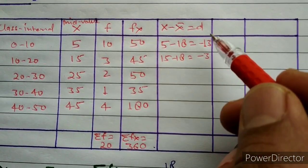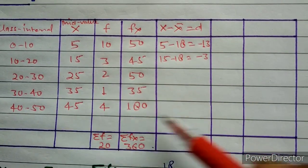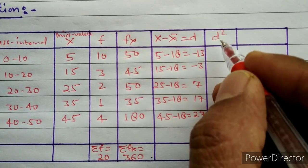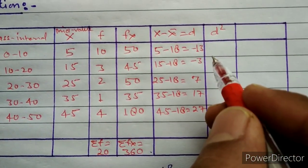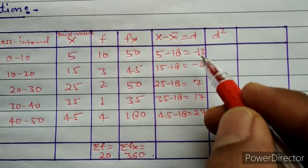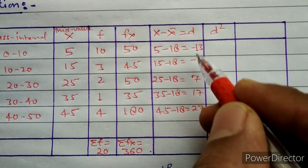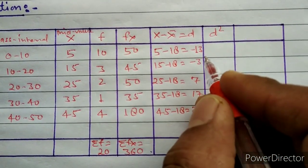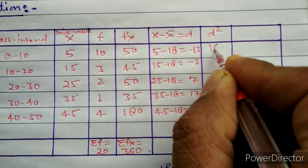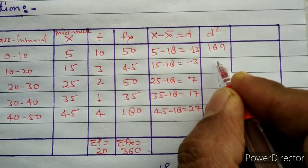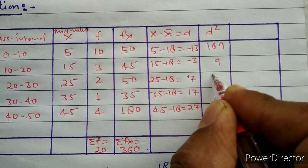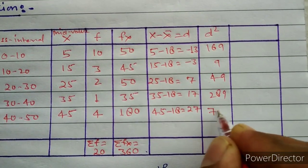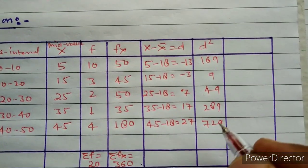Now we will write the caption D² and calculate D². We just need to square the D values. So 13 squared is 169, 3 squared is 9, 7 squared is 49, 17 squared is 289, and 27 squared is 729.